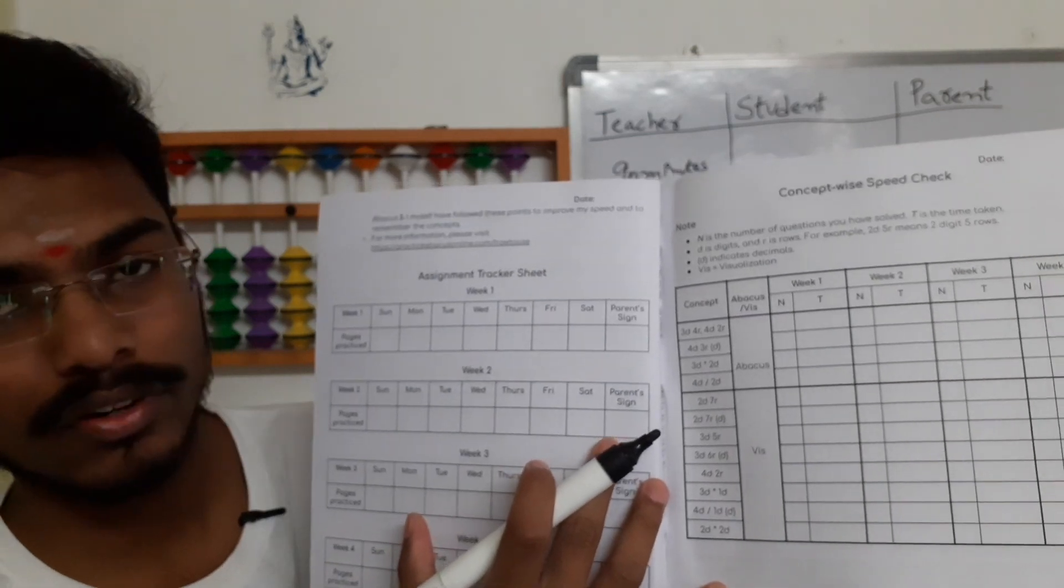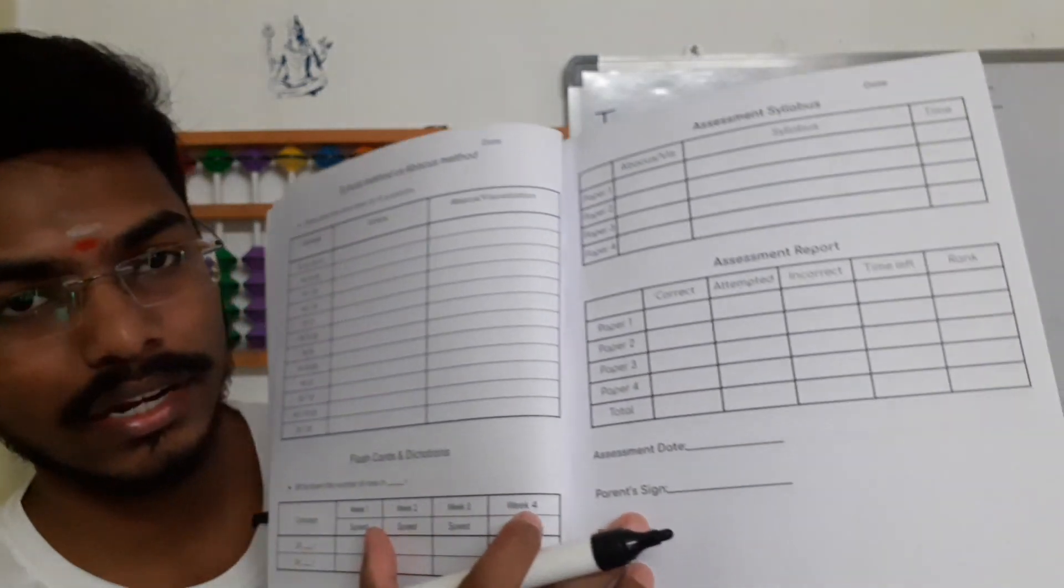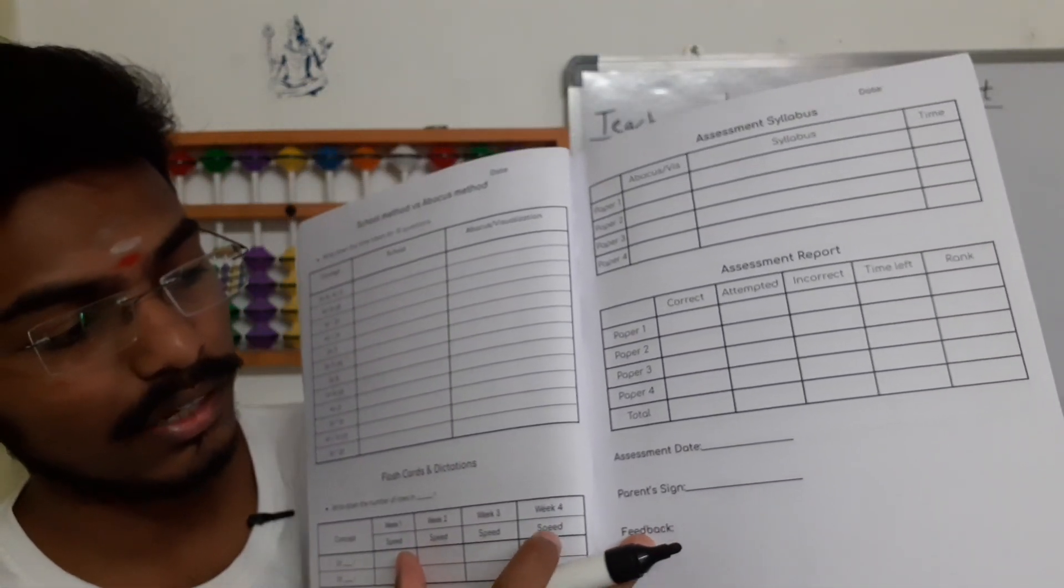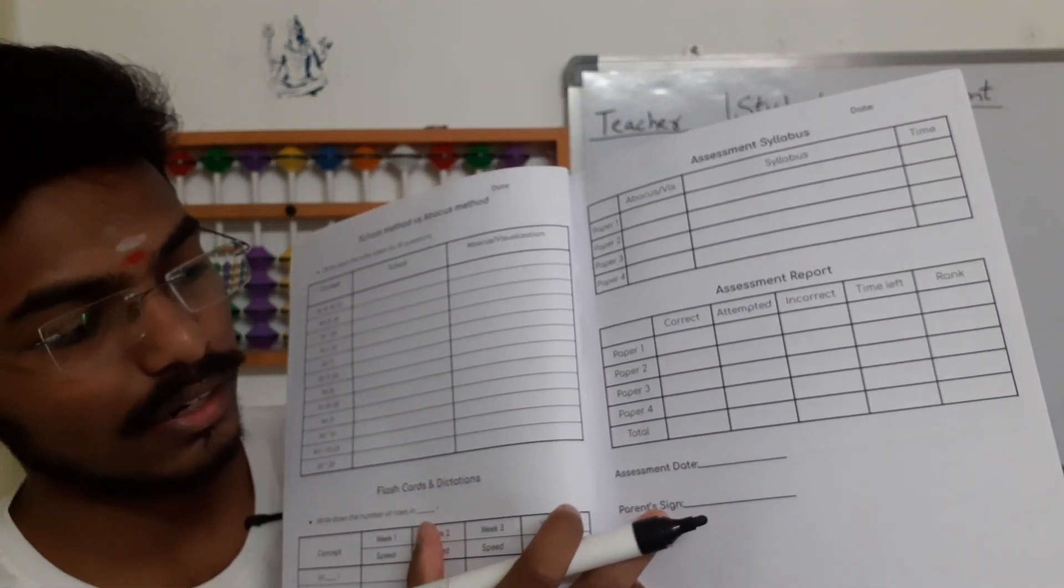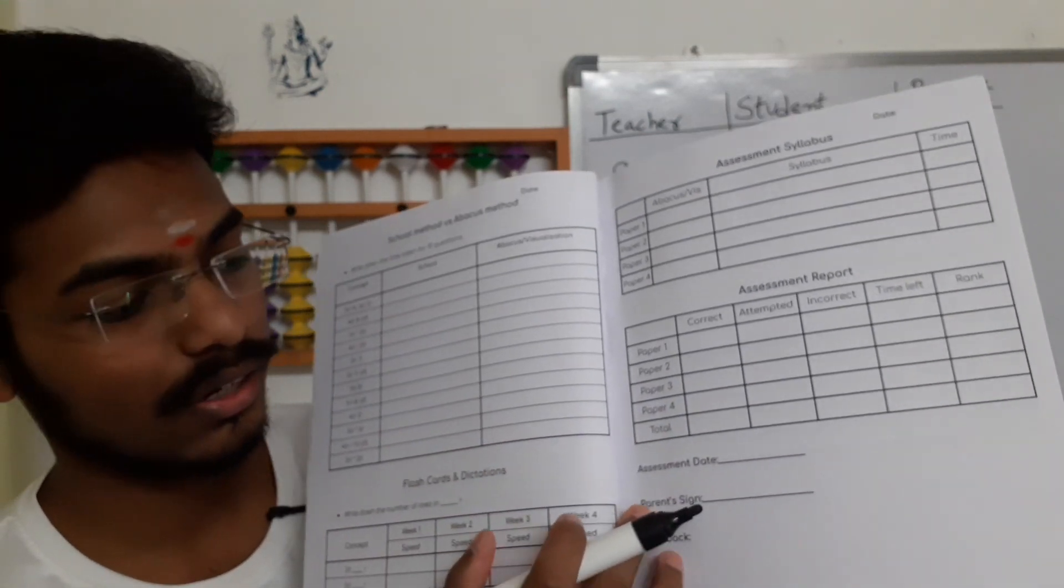So check the assignment every week and sign here. And also once the assessment is done, you can sign here. Feedback I will give in class and assessment, parent sign. Check this and you can sign here.